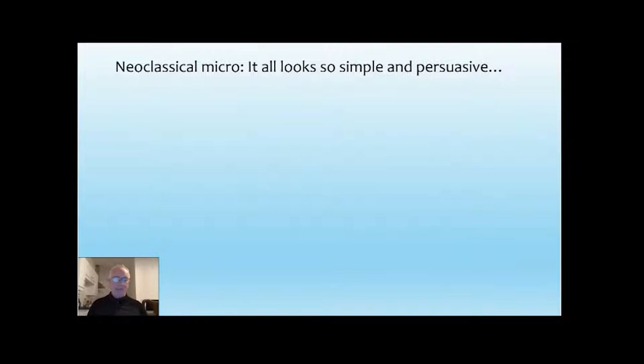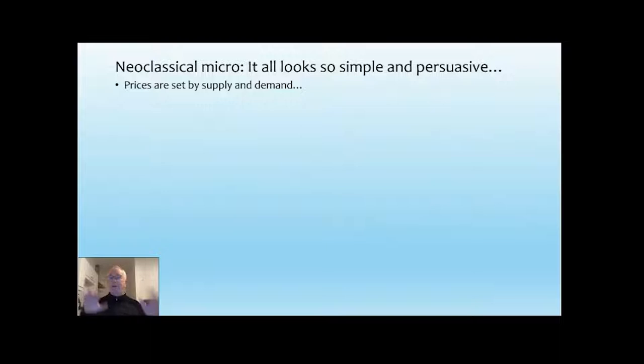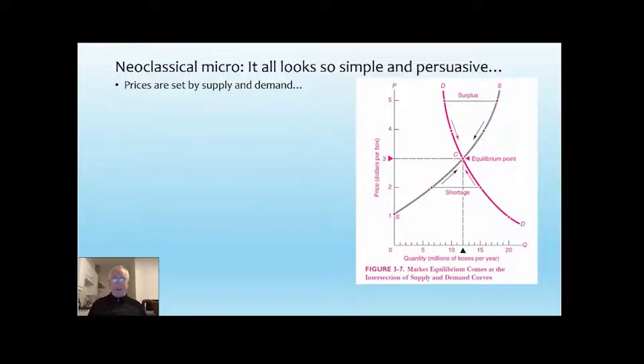If you look at neoclassical micro, one of the reasons why neoclassical theory is so strongly believed by its fans is that it looks so simple and persuasive. Prices are set by supply and demand. The drawing — and I emphasise, this is a drawing, it is not real data — shows demand falling as prices rise, supply rising as prices rise. And there's an equilibrium where the level demanded equals the level supplied, which is seen as the ideal situation for the market.